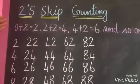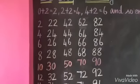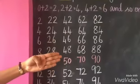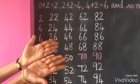Let us see 2 Skip Counting. Here, we add 2 each time. 0 plus 2, 2. 2 plus 2, 4. 4 plus 2, 6. 6 plus 2, 8. 8 plus 2, 10.